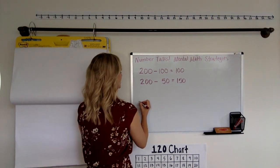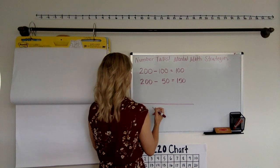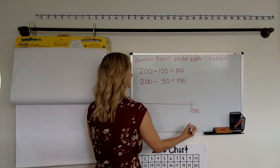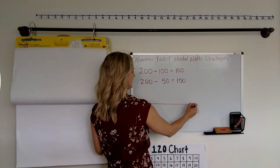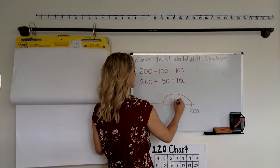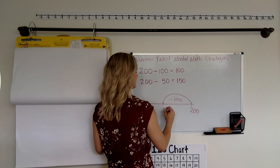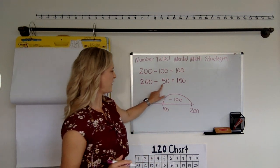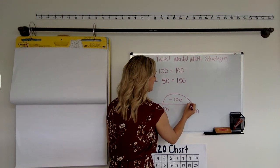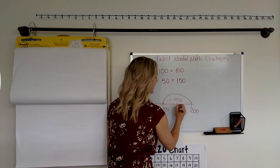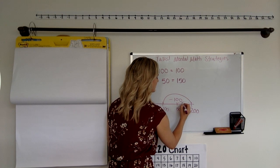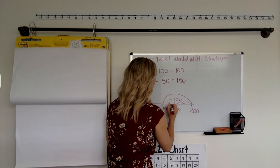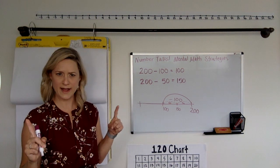Okay, so let's check that out on the number line. Here's 200. Here's 200. You said 200 minus 100 would give us 100. But 200 minus 50 would just be half of that. So the answer would be 150 because two 50s make up 100. Am I right? I think so.